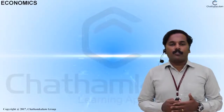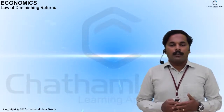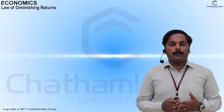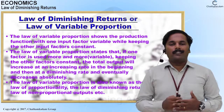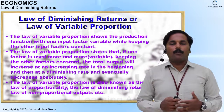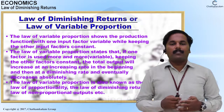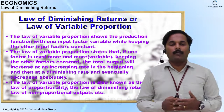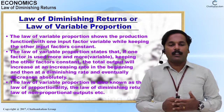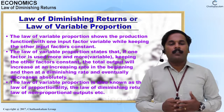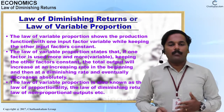Next is the law of production with one variable input, also called the law of diminishing returns. It shows the production function with one input factor variable while keeping the other input factor constant. The law of production states that if one factor is used more and more while keeping the other factors constant, total output increases at an increasing rate in the beginning, then at a diminishing rate, and eventually decreases absolutely. This law is also known as the law of proportionality and the law of diminishing returns.